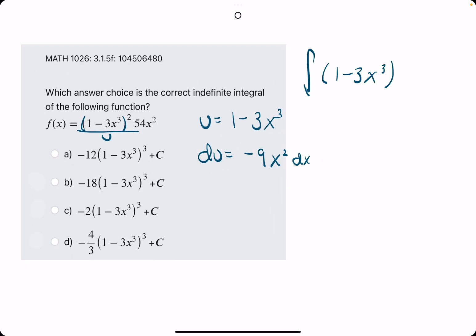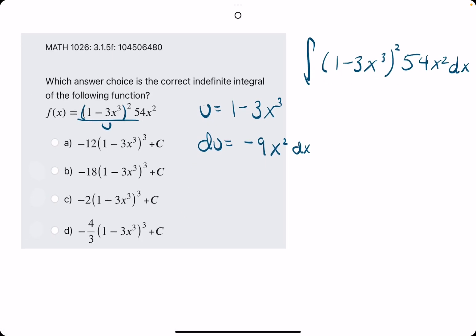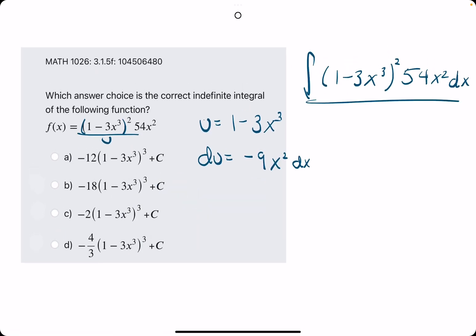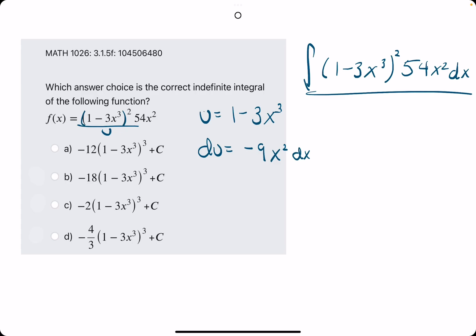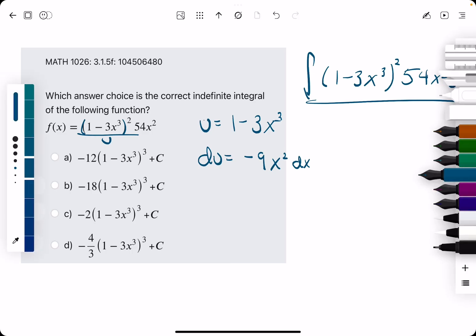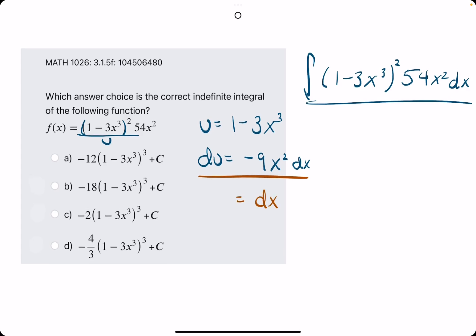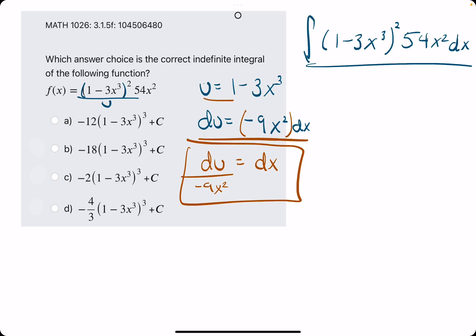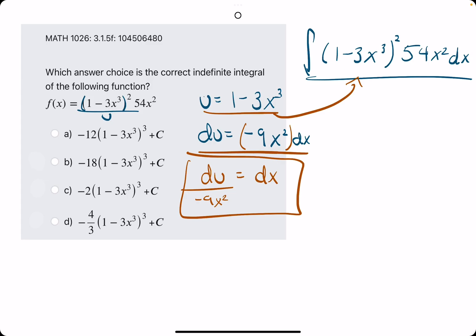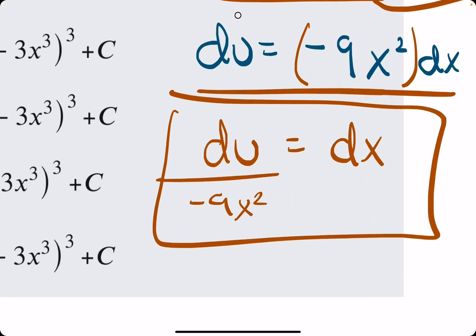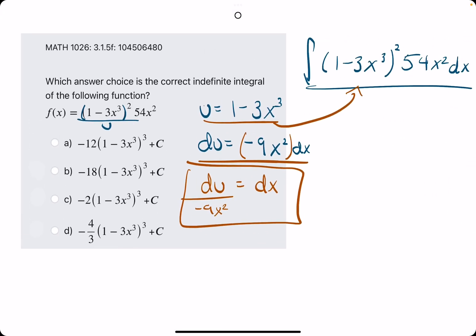If we were taking the integral of (1-3x³)² times 54x² dx, there's always a dx within the integral. We want to replace all this integral that has x's and dx's with u's and du's. One thing I recommend getting in the habit of is when you find du, go ahead and solve this for dx. Get dx by itself on the right side by dividing by everything else. So du divided by negative 9x squared.